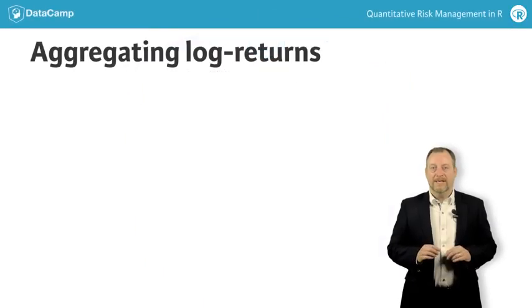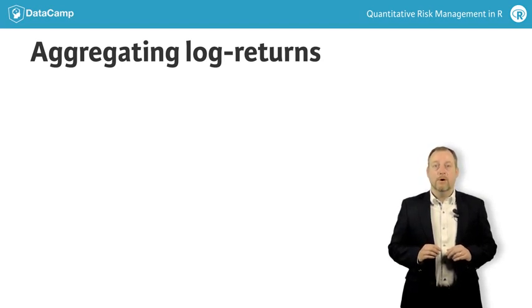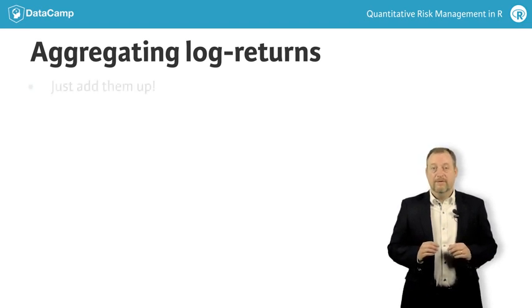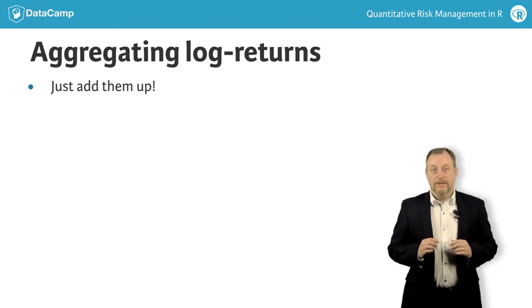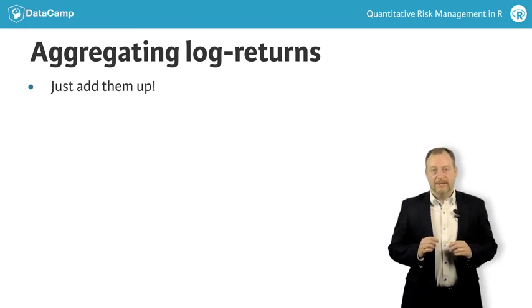It is easy to aggregate shorter interval log returns, like daily returns, to obtain longer interval returns, like weekly or monthly returns. Effectively, you just add them up. By aggregating returns, you can study the risks over longer time horizons, such as a month, a quarter, or a year. There is some simple mathematics behind the aggregation of log returns.